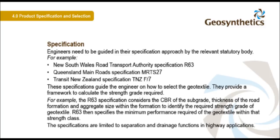For example, the R63 specification considers the CBR of the subgrade, thickness of the road formation, and aggregate size within the formation to identify the required strength grade of the geotextile. R63 then specifies the minimum performance required of the geotextile within that strength class. These specifications are limited to separation and drainage functions in highway applications.